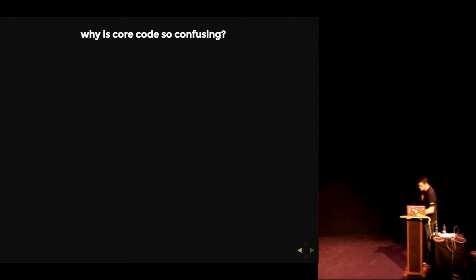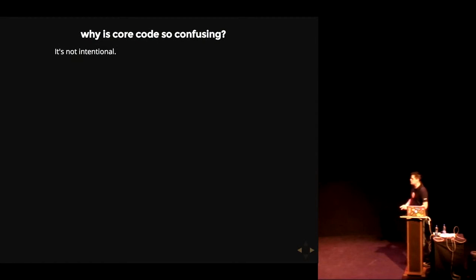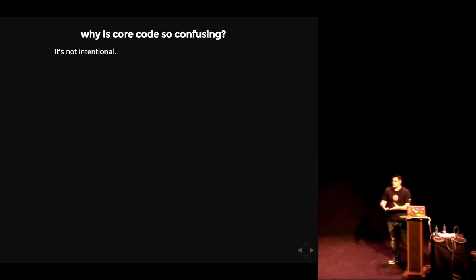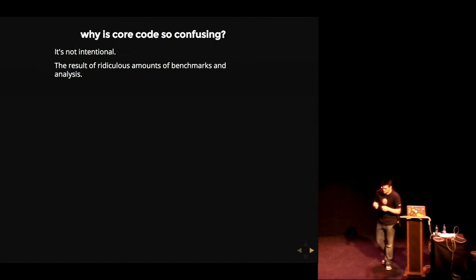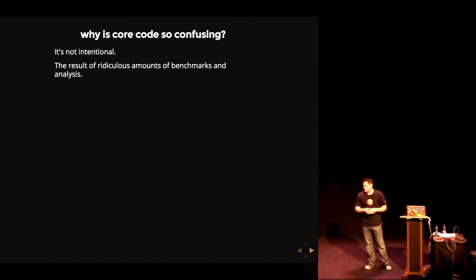Let's discuss a little why core code is so confusing. It's not intentional. I never set out to actually make things harder for other developers. I do it after having done much analysis and benchmarking. And when I say analysis — by a quick show of hands, who here has heard of IR Hydra?